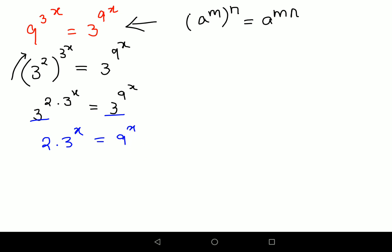Now after this, we can try to put everything in terms of 3 raised to x. So this becomes 3 raised to 2x. In this case, let's try and divide both sides by 3 raised to x.